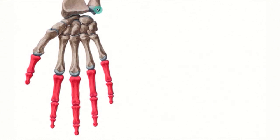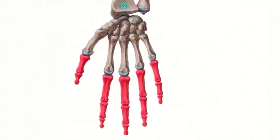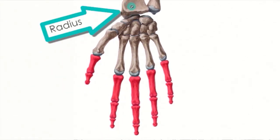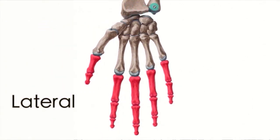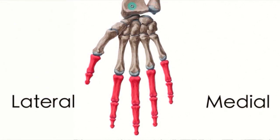In terms of direction, we're looking at the palmar — also known as the volar — side of the hand. Notice that you have the radius located laterally and the ulna located medially. The radius is on the same side as the thumb, going all the way to the medial portion where you see the little finger located medially.